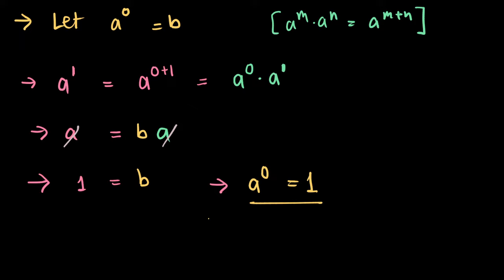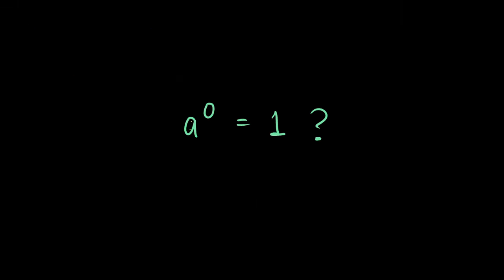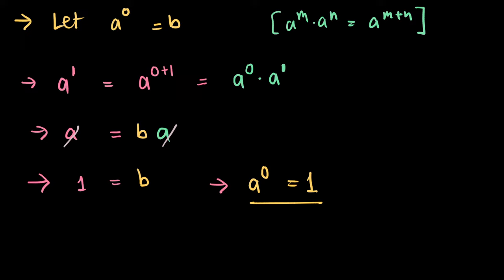Kind of neat, isn't it? We have just proved that a raised to the power of zero is one. To recap: we let a^0 be b, we took a^1 and expressed it differently. That is the trick - you have to look at things differently. We substituted the value of a^0, cancelled things out, and finally proved that any number raised to the power of zero is one.